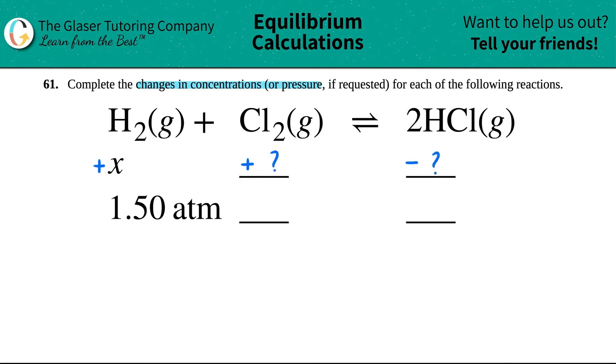Now we got to figure out what these are. And that comes from the coefficients. There was nothing in front of the H2, that means there was one. There was nothing in front of the Cl2, that means there was one. And then there's two HCls.